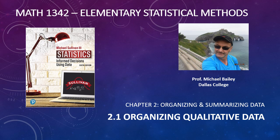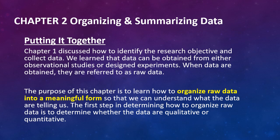Let's begin Chapter 2, Organizing and Summarizing Data, specifically with Section 1, Organizing Qualitative Data. Chapter 1 discussed how to identify the research objective and collect data. We learned that data can be obtained from either observational studies or designed experiments. When data are obtained, they are referred to as raw data. The purpose of Chapter 2 is to learn how to organize raw data into a meaningful form so we can understand what the data are telling us. The first step is to determine whether the data are qualitative or quantitative.